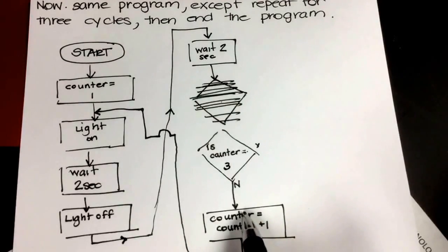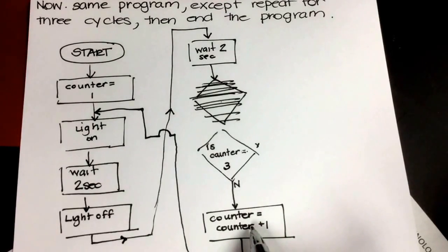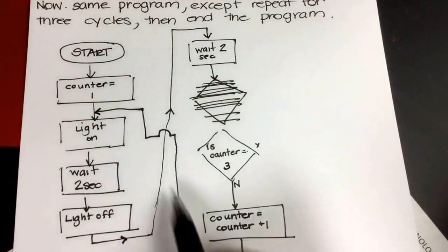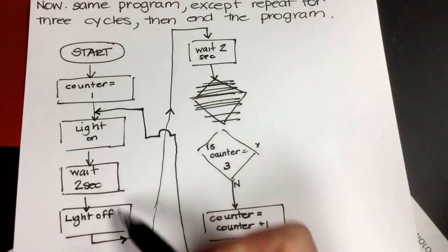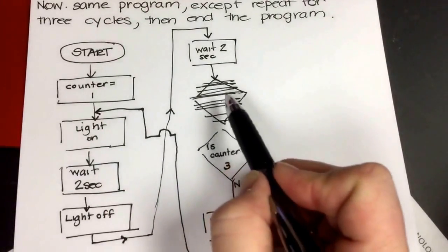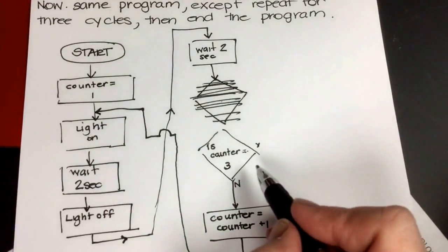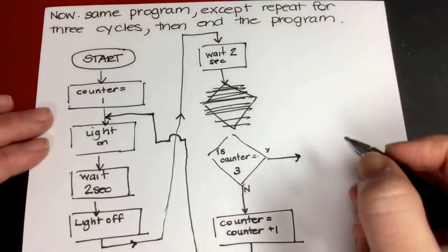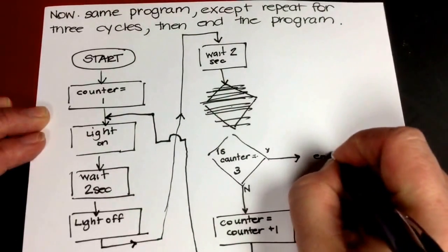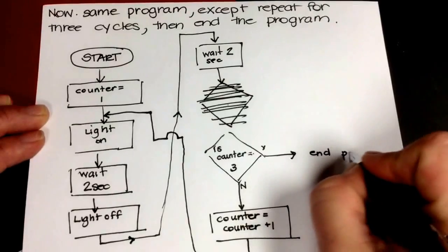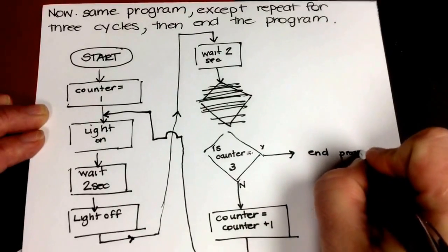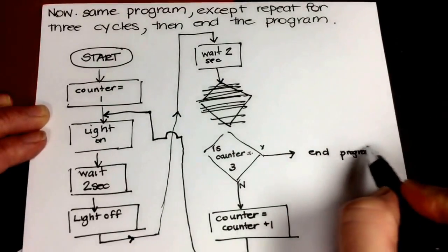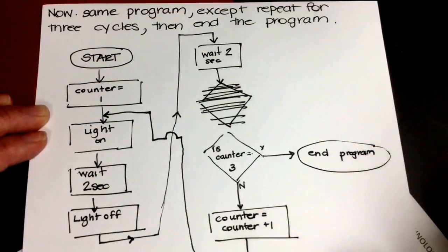So now I'm going through again, counter is going to be equal to counter plus one, so it's three, and turn the light on, I'm going to wait two seconds, I'm going to turn the light off, I'm going to wait two seconds. This time, counter is equal to three, yes, and then what I want it to do is end the program. Or that's our stop.